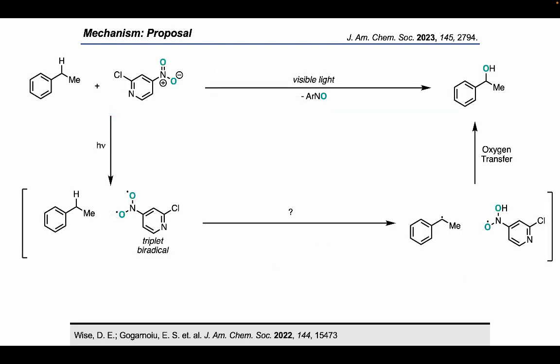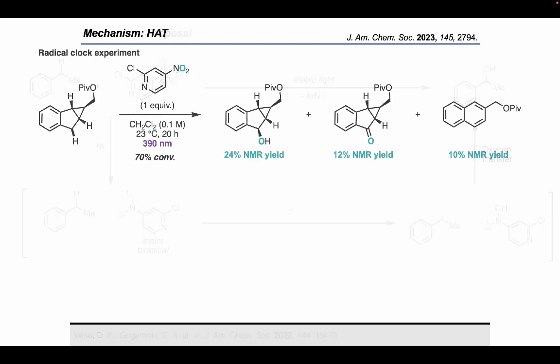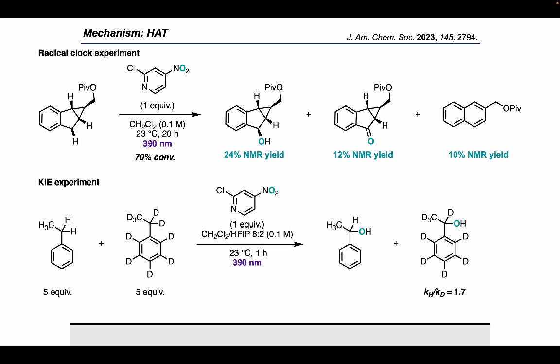After examining the scope, we turned our attention to understanding the mechanism of the transformation. We began with experiments to support that the triplet biradical of the nitroarene is promoting HAT from the alkane to generate a carbon-centered radical. Subjecting a radical clock substrate to the reaction conditions, we were able to detect the ring-opened product in 10% yield, suggesting that a carbon-centered radical is indeed being formed. We then investigated the primary KIE using an intermolecular competition study and found a kH/kD of 1.7, similar to previously reported C-H hydroxylation methods, suggesting that C-H bond cleavage is part of the rate-limiting step.